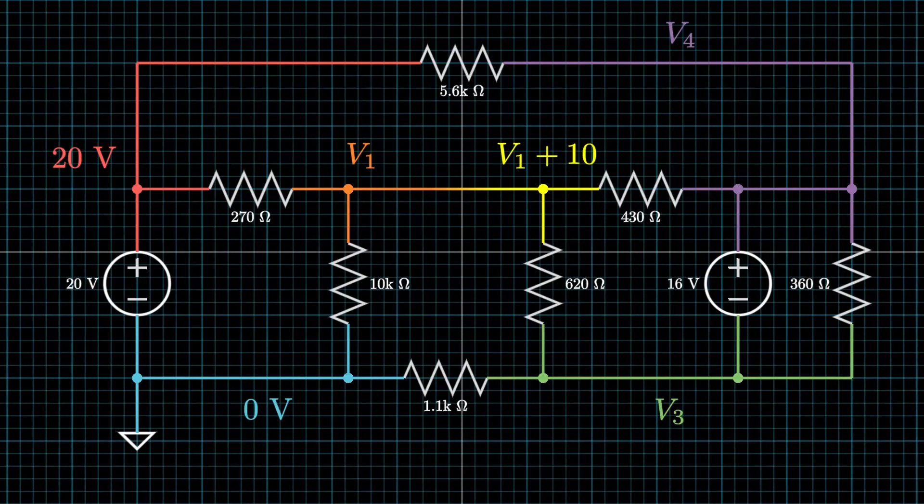So whenever you have a supernode, they're basically just nodal analysis, but the voltage source turns into a wire, and you have separate voltages on that wire. It's kind of weird to think about, but this is kind of just how I picture it in my brain.